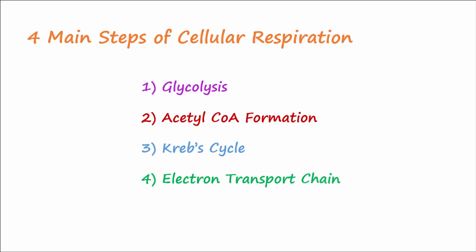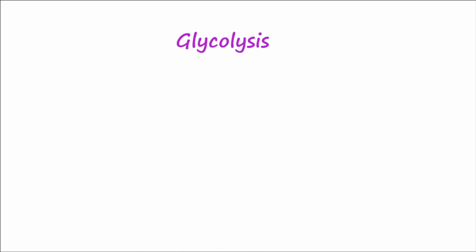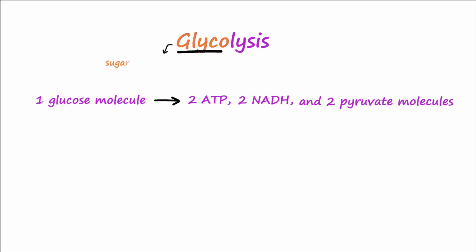The focus of this video is on glycolysis, which is the first step of cellular respiration. The process of glycolysis takes one glucose molecule and breaks it down to ultimately produce two ATP, two NADH, and two pyruvate molecules. This is easy to remember because glycolysis literally means glyco, or sugar, like a glucose molecule, and lysis, or breakdown.